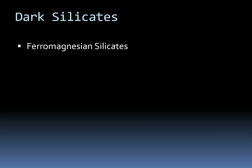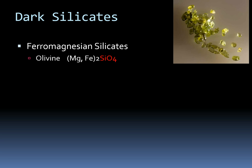On the other side, we have the dark silicates. These have iron or magnesium in their structures that make them dark in color. I'll show you a couple of examples that don't look so dark, but they still count. For instance, olivine — olivine has iron and magnesium and then a silicon-oxygen tetrahedron. So even though it's green, it's still considered a dark silicate.